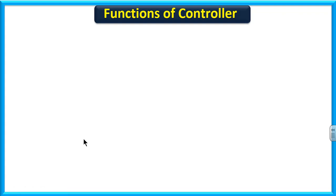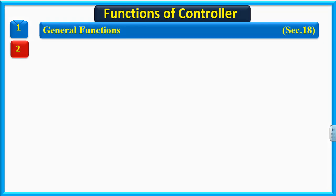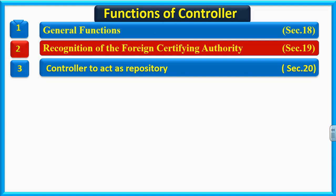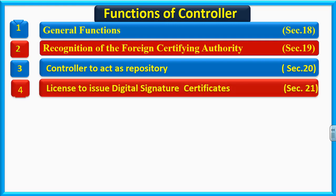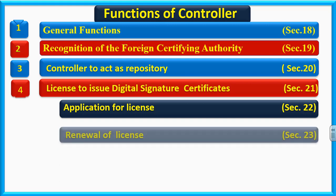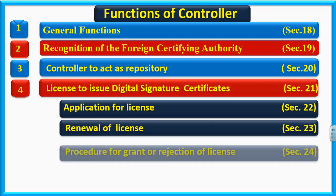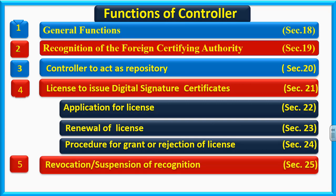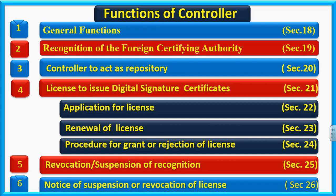Now the functions of controller. Sabse pahle mein controller ke functions ki complete list de raha hoon: 1) General functions — Section 18; 2) Recognition of foreign certifying authority — Section 19; 3) Controller to act as repository — Section 20; 4) License to issue digital signature certificate — Section 21; 5) Application for license — Section 22; 6) Renewal of license — Section 23; 7) Procedure for grant or rejection of license — Section 24; 8) Revocation or suspension of recognition — Section 25; 9) Notice of suspension or revocation of license — Section 26.